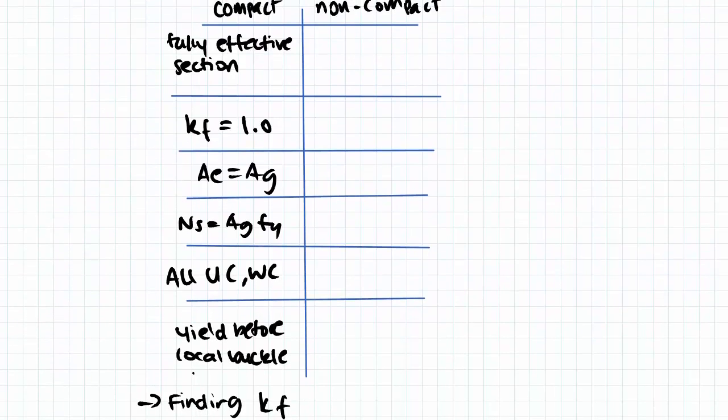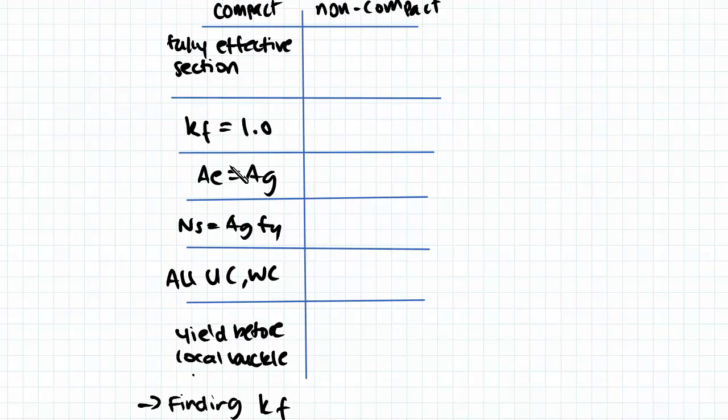When that is the case, we're going to use a form factor equal to one. Our effective area is equal to our gross area, so the entirety of our gross area is able to resist compression. When that is the case, our section capacity is equal to Ag*fy, something similar to those you've encountered in tensile capacity.